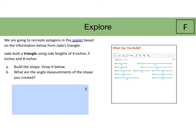They are going to repeat it, except now the situation is Jada built a triangle using side lengths of four inches, five inches and eight inches. Build the shape, draw below. What are the angle measurements of the shape you have created? Again, you might want to support students by saying that since it's a triangle, it has three angle measurements and you might want to provide them with a mini checklist. So they include the four inch, the five inch and the eight inch.